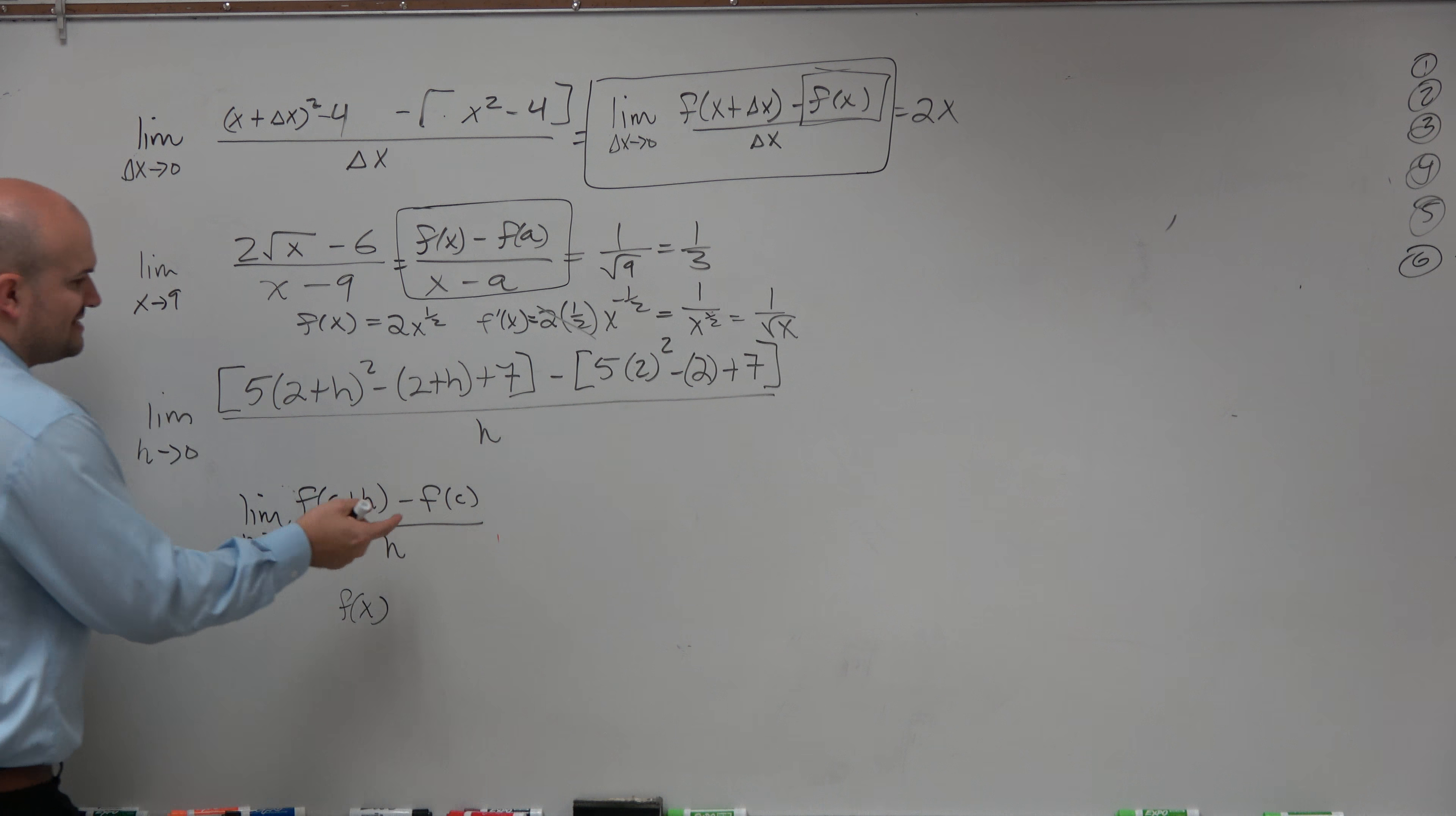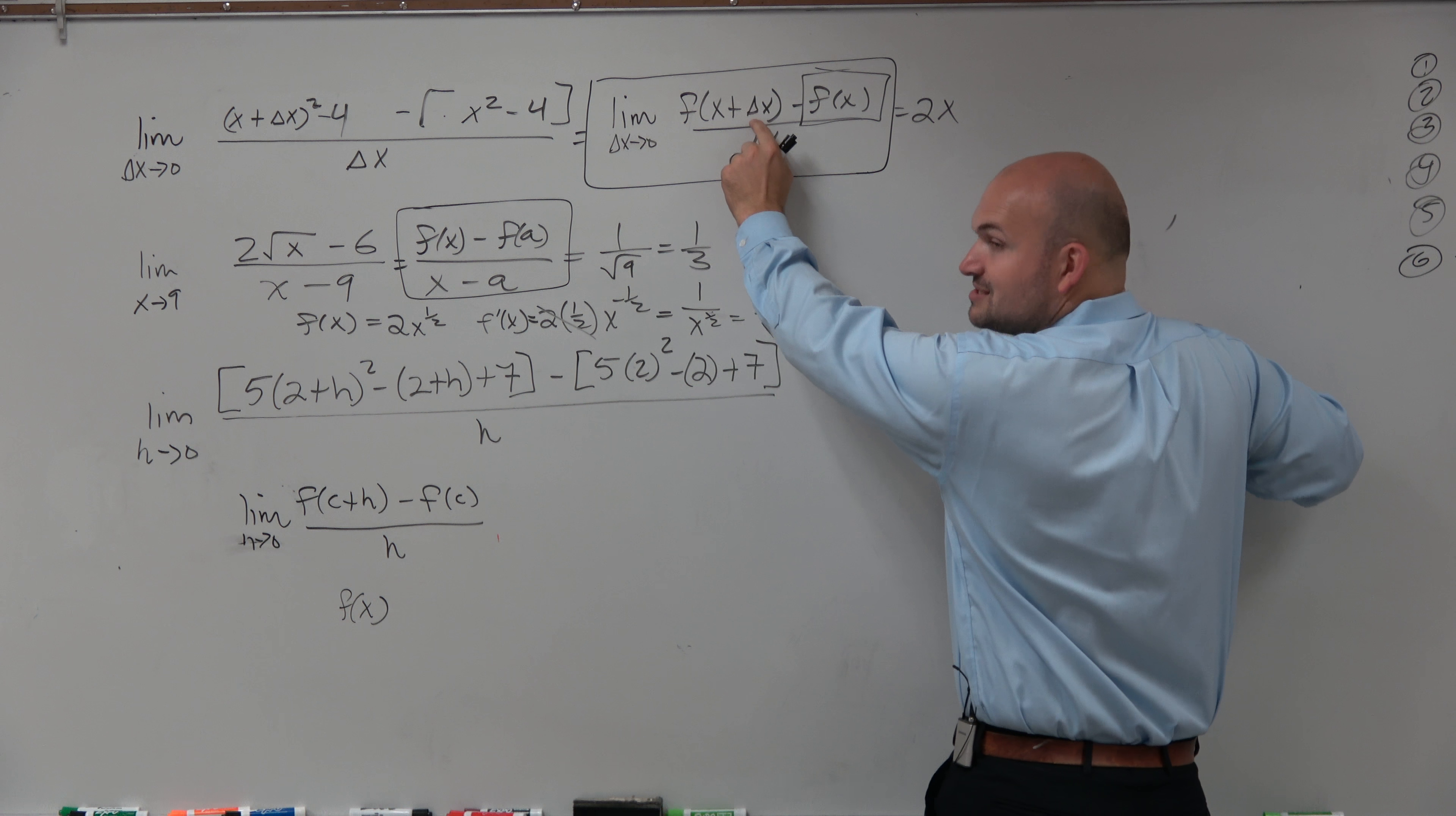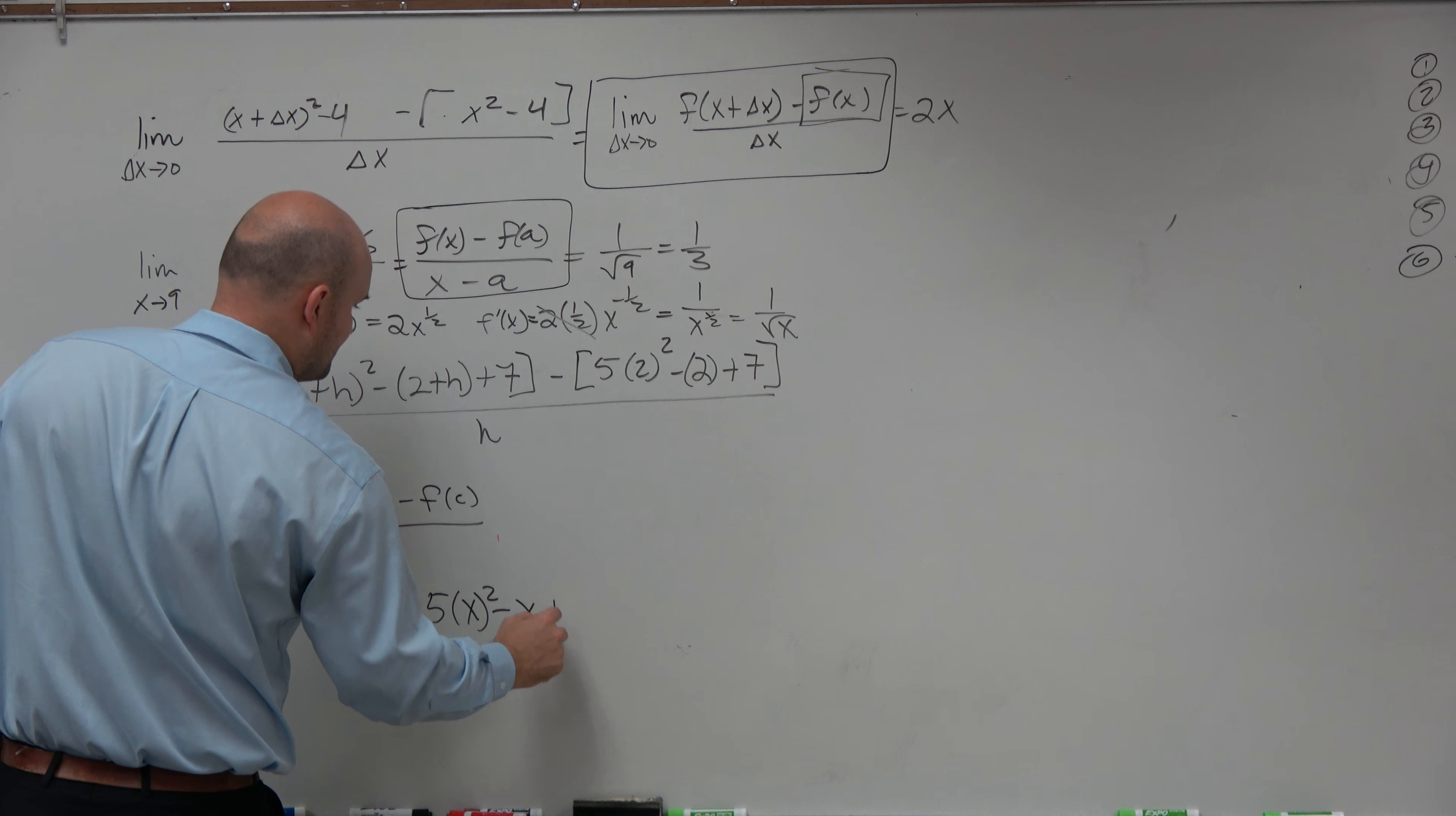Well, anywhere I see a 2, I realize that is my c, right? Because I'm plugging in. You can see I plugged in 2 here. So these are all my c's. So I'm going to replace this with an x. And then, obviously, the h, we don't really care about the plus delta x or plus h. I just want to know what the x is. So I can realize the function is 5x squared minus x plus 7.